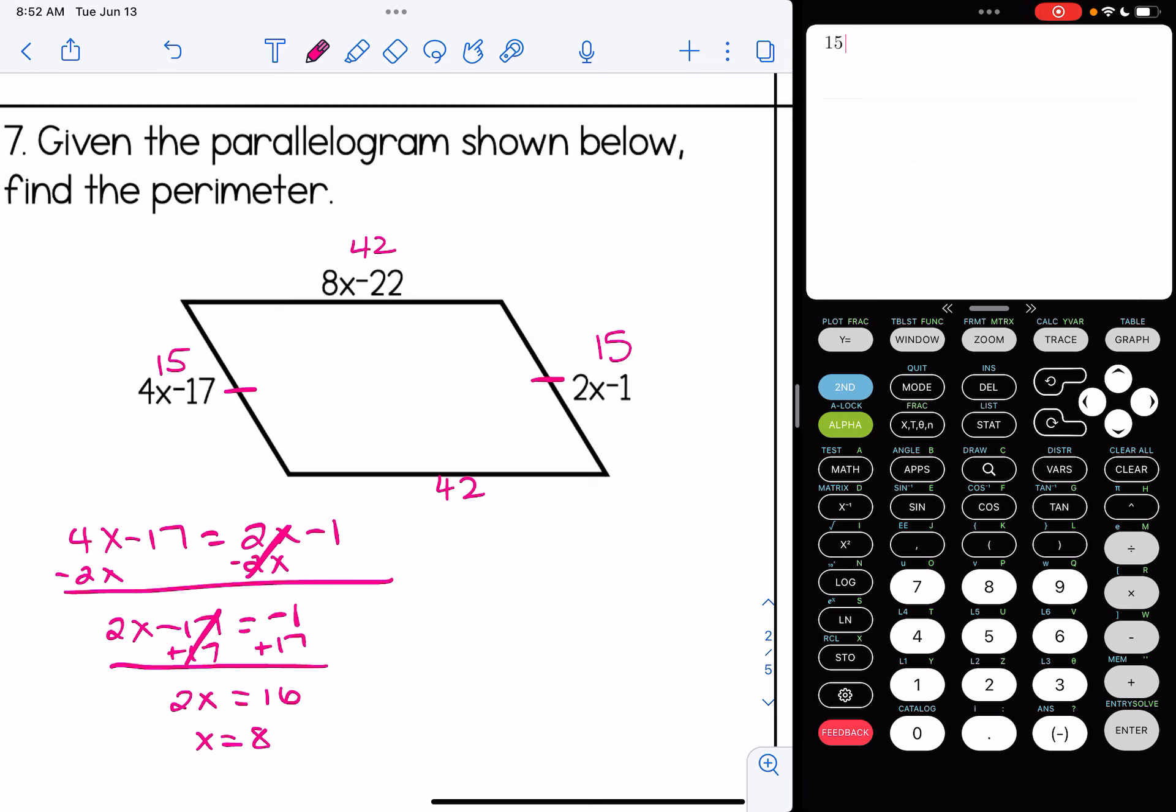So to find our perimeter, I'm going to add up 15, 42, 15, and 42. So I'm going to write that all in here, and it looks like our perimeter of this parallelogram is 114 units.